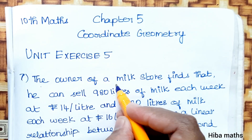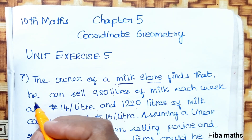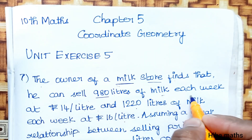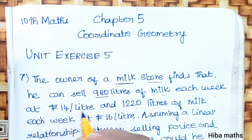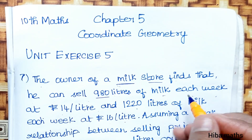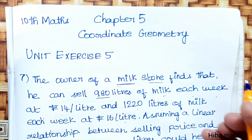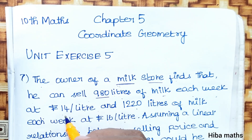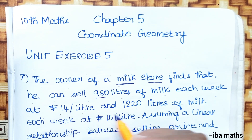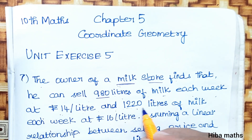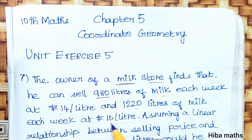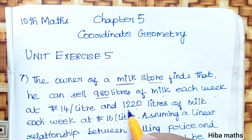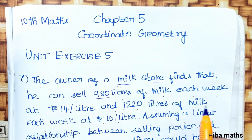The owner of a milk store finds that he can sell 980 litres of milk each week at Rs.14 per litre, and 1220 litres of milk each week at Rs.16 per litre.